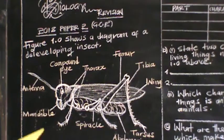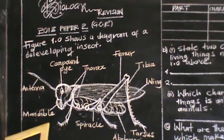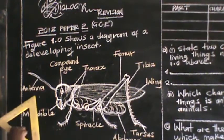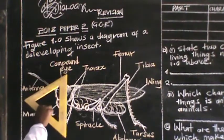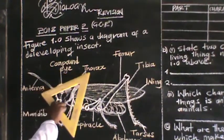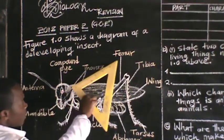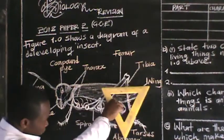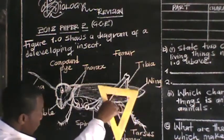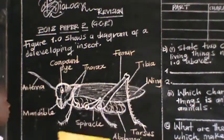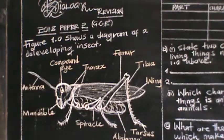So this is an insect. Now, we have got the mandibles, we have got the antenna, we have got the compound eye, we have got the thorax, the femur, we have got the tibia, we have got the wing, then we have got the abdomen, and we have got the spiracle.